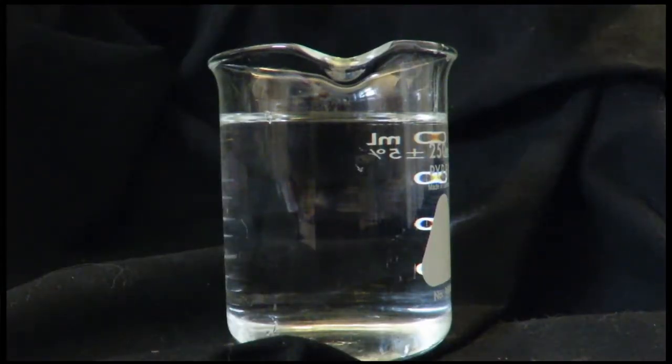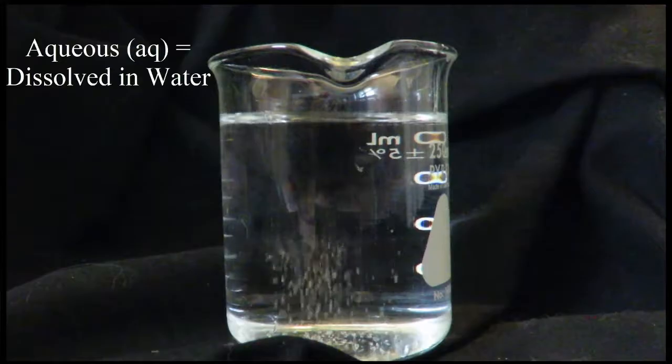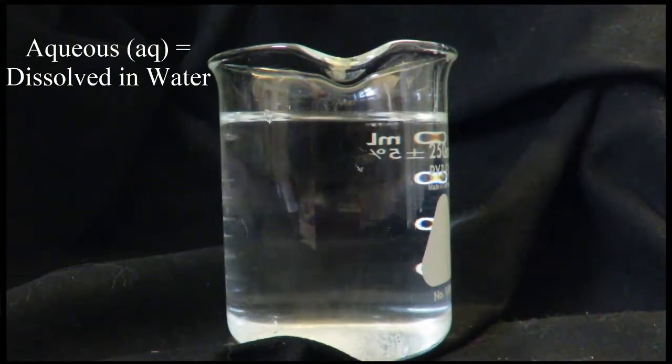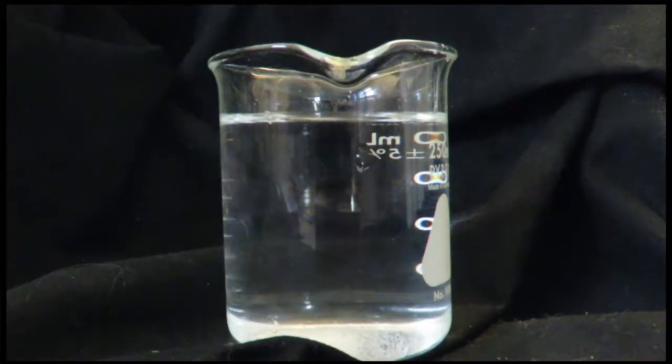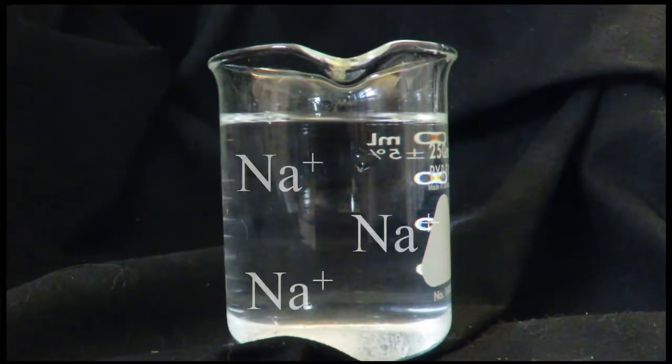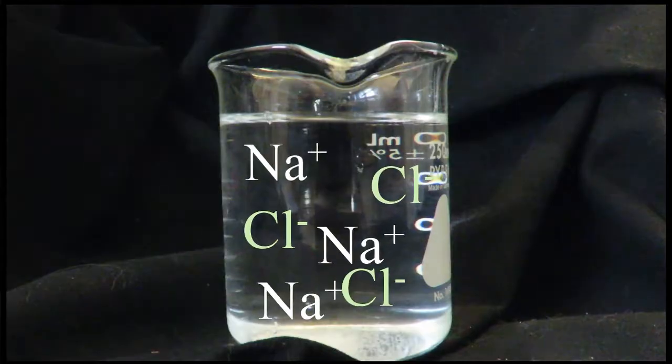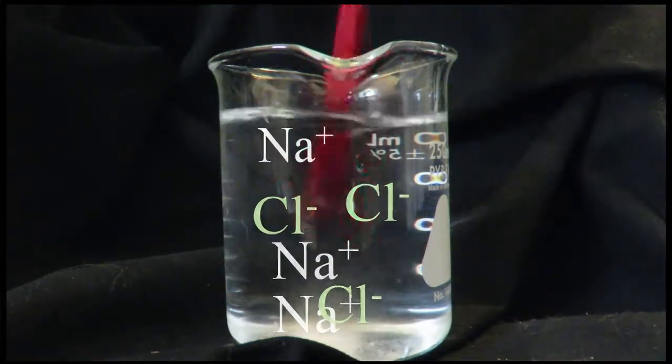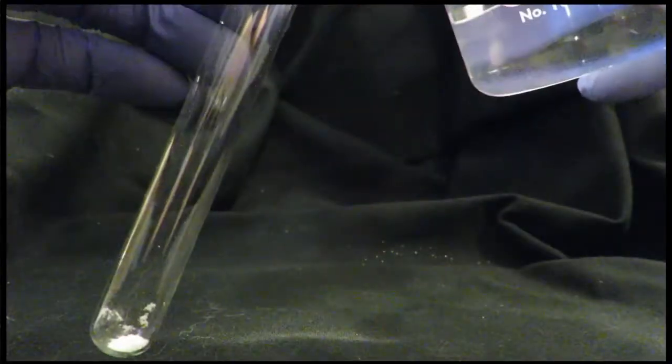So here we're adding just normal NaCl to water. It's aqueous, it's dissolving. That means it's breaking apart into its ions. So we get Na+ and then Cl- from the NaCl. They're aqueous, they're dissolved in water. So we'll stir it up here a little bit. That'll speed up the dissolution.